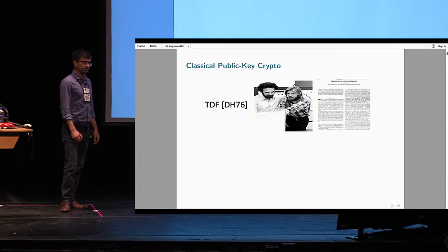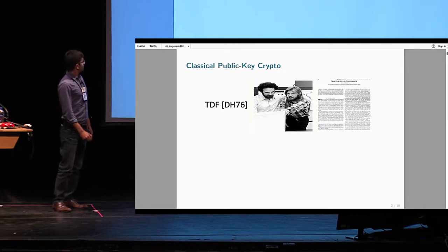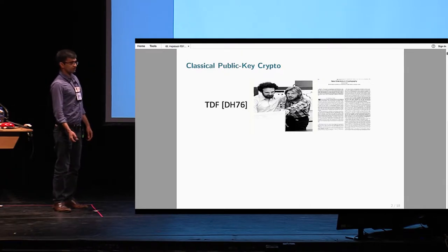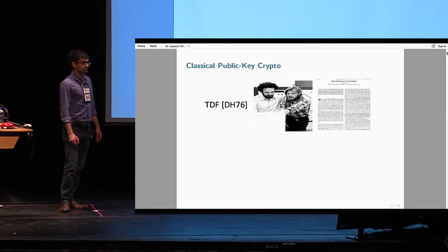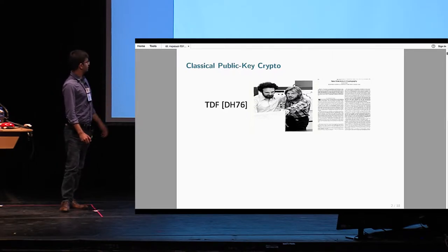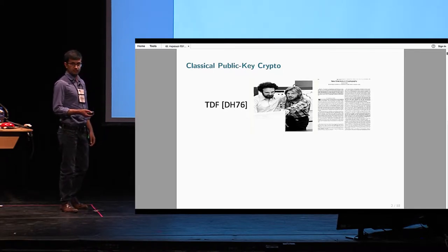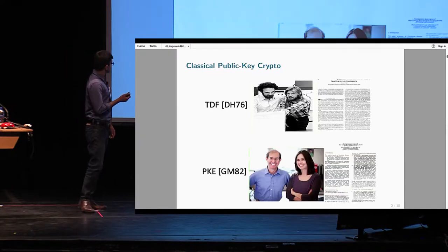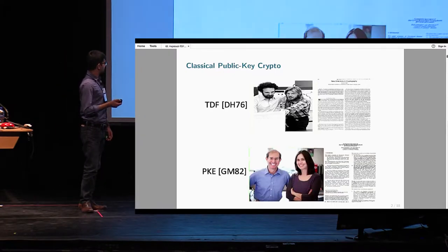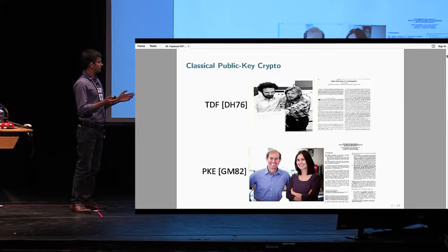Trapdoor functions are a fundamental primitive in crypto. They were first introduced in a landmark paper by Diffie and Hellman in 1976, which developed the foundations of what we now call public key cryptography. Another fundamental primitive in cryptography is public key encryption, first designed in the famous RSA paper.